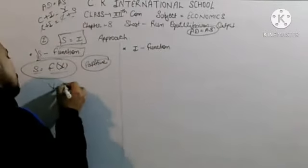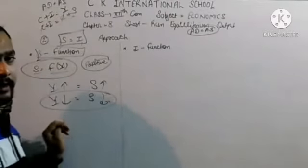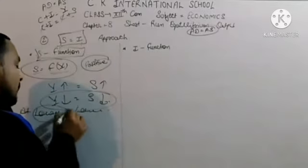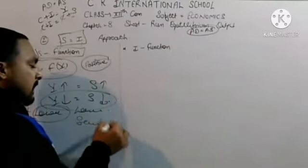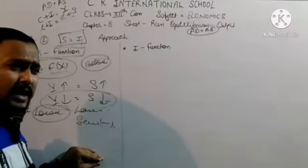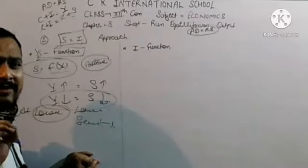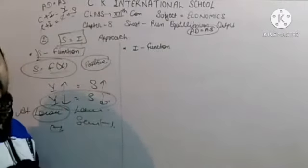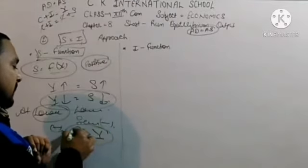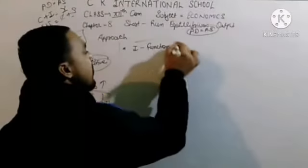If income increases, saving also increases; if income decreases, saving also decreases. At zero or very low levels of income, saving can become negative - because consumption (C) is greater than income. This is the saving function, which has a direct positive relationship with income. At lower income levels, saving can be negative.